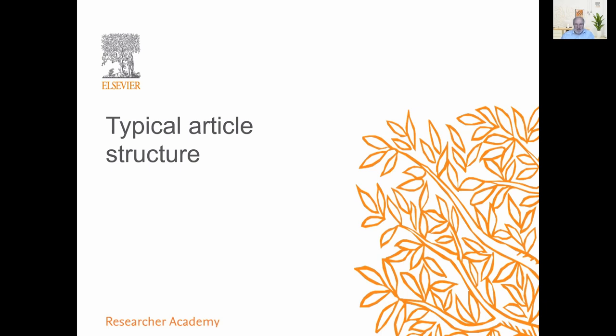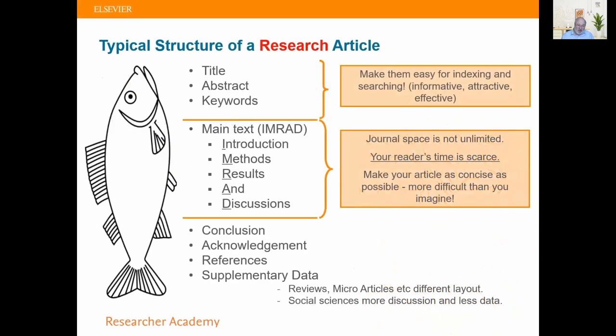An article structure varies from field to field, but typically you've got a certain layout. Some journals tell you exactly what they want and the sequence they want it in. If not, you can use the typical structure, which works very well — it's described as a fish. The head is the title, abstract, and keywords. The body is the main text: introduction, methods, results, discussion. The tail is the conclusion, acknowledgments, references, and supplementary data. The title, abstract, and keywords can be seen by anyone in the world for free through most databases.